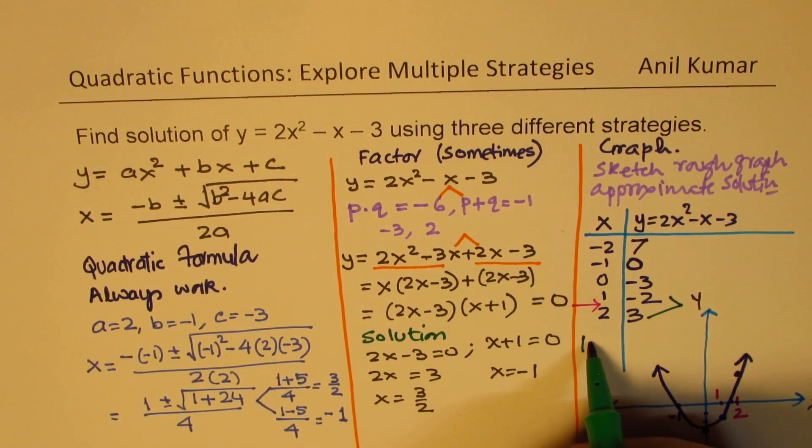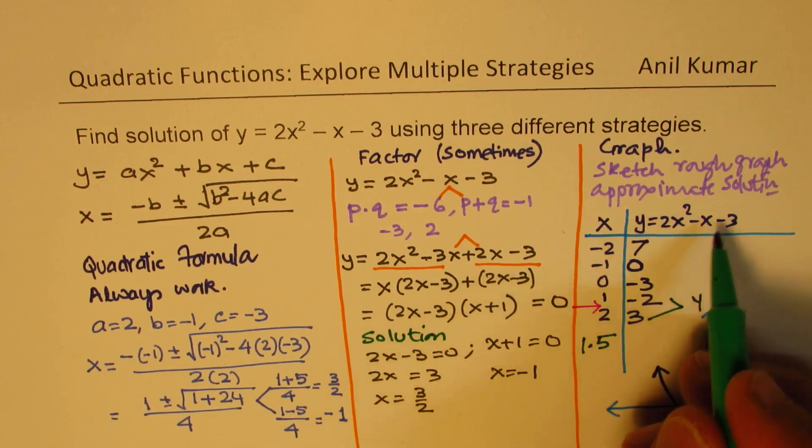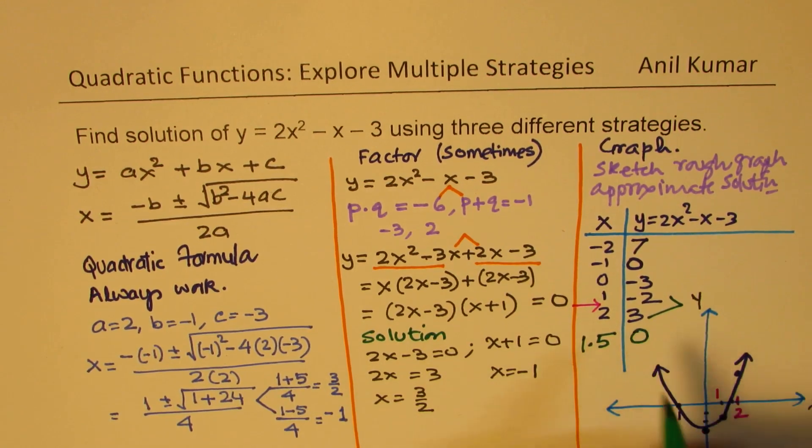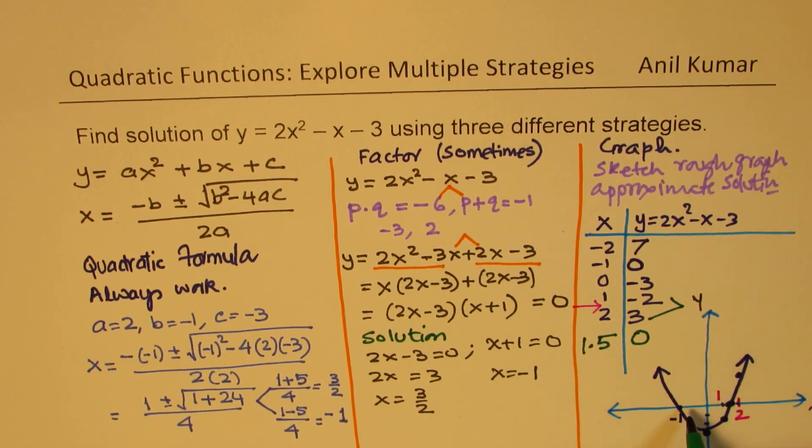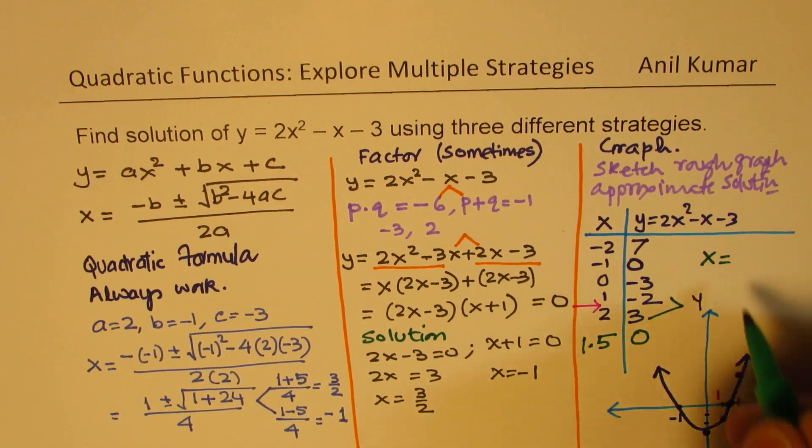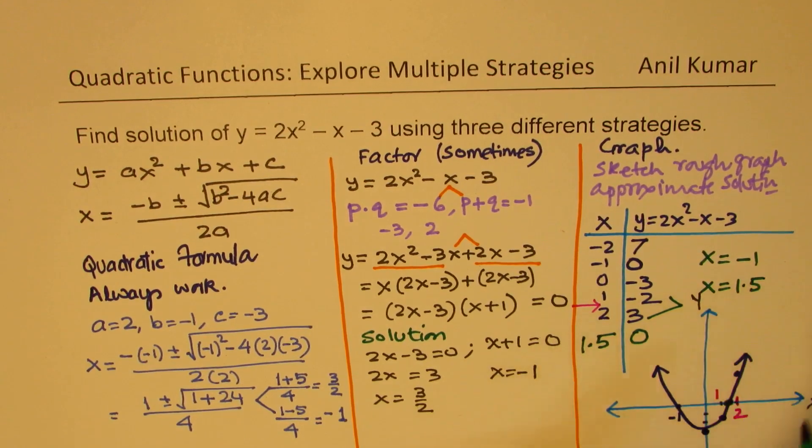So let's substitute 1.5. So if I substitute 1.5, I do get 0. So that point here is 1.5. So we have two solutions here, which is x equals minus 1 and x equals 1.5.